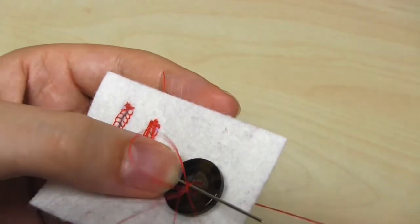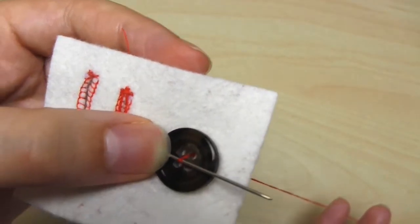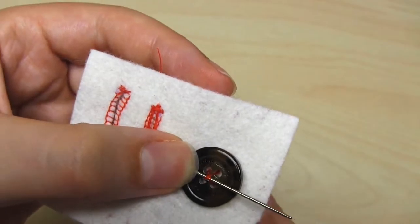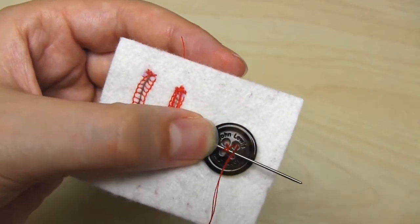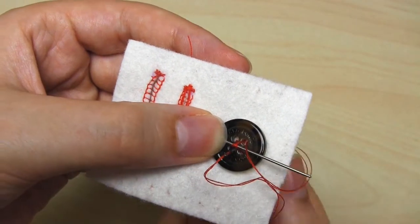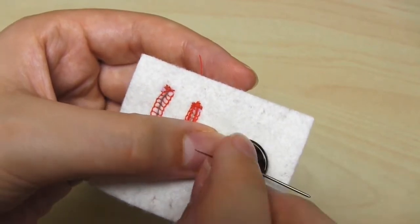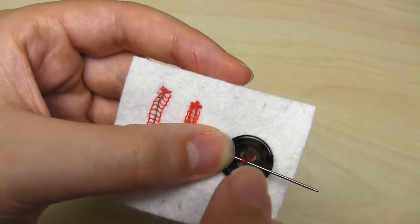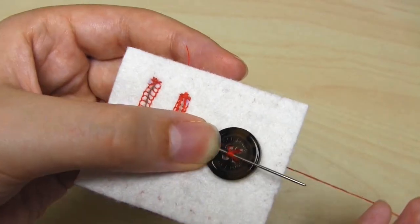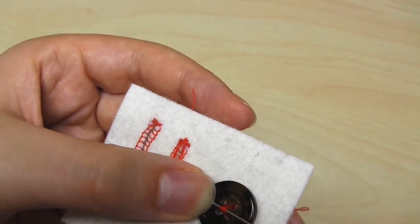And you repeat this cycle several times. Sew up through the top right, and down through the bottom left. Then up through the bottom right, and down through the top left. I usually do this around five or six times.